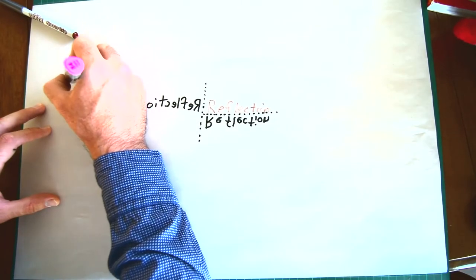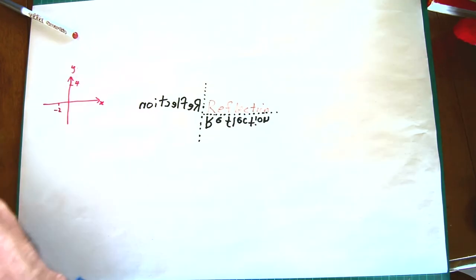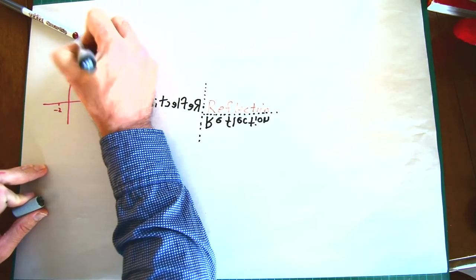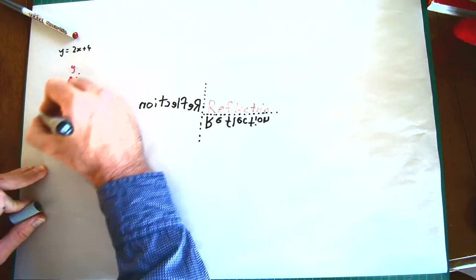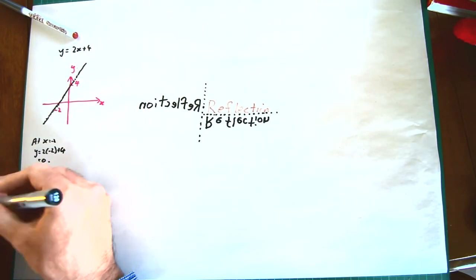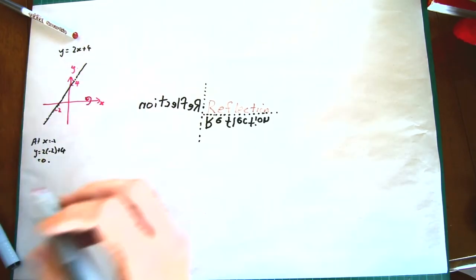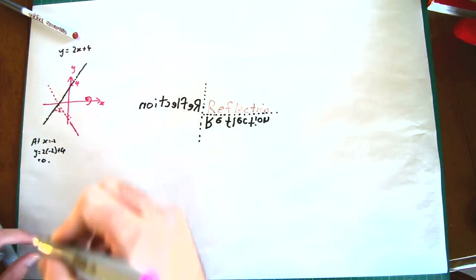Consider the equation y equals 2x plus 4. Now we know that this is a straight line of slope 2 and it has a y-intercept of 4, and that x equals minus 2, y is equal to 0. Let's suppose we want to flip this curve upside down. This is a reflection, if you like, about the x-axis.